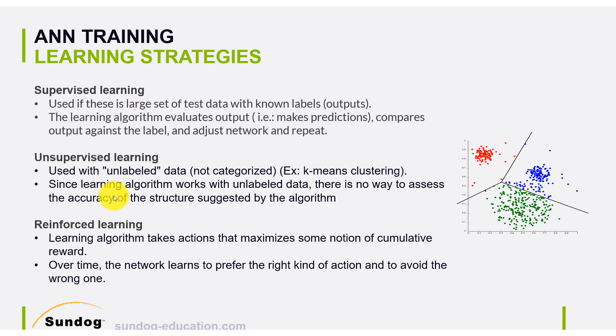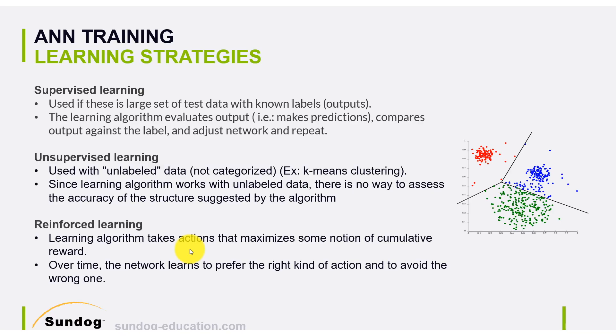The last type is what we call reinforced learning. Here, the learning algorithm takes action to try to maximize what we call the notion of cumulative reward. Whenever the network does something wrong, we penalize it. Whenever the network does something right, we give it some reward. So the network strives to improve or maximize that reward.